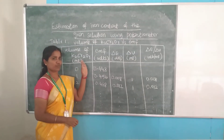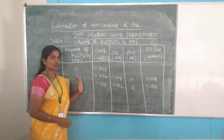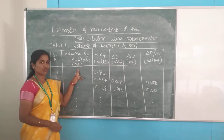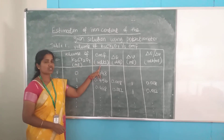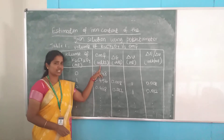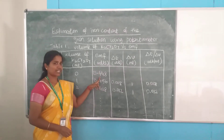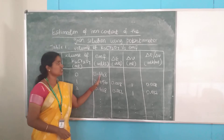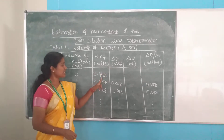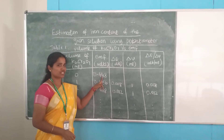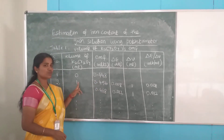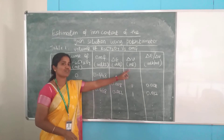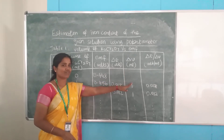Next we will see the tabulation. This is the table we are using to enter the values: first is serial number, then volume of K₂Cr₂O₇ which is the titrant solution measured in ml, then EMF in volts. We are measuring the readings in millivolts on the meter, and converting that into volts when entering the values. Then next is delta E, the difference between the EMF — second EMF minus first EMF. Then delta V, the difference between the volume — second volume minus first volume. Finally we take delta E by delta V for plotting the graph.